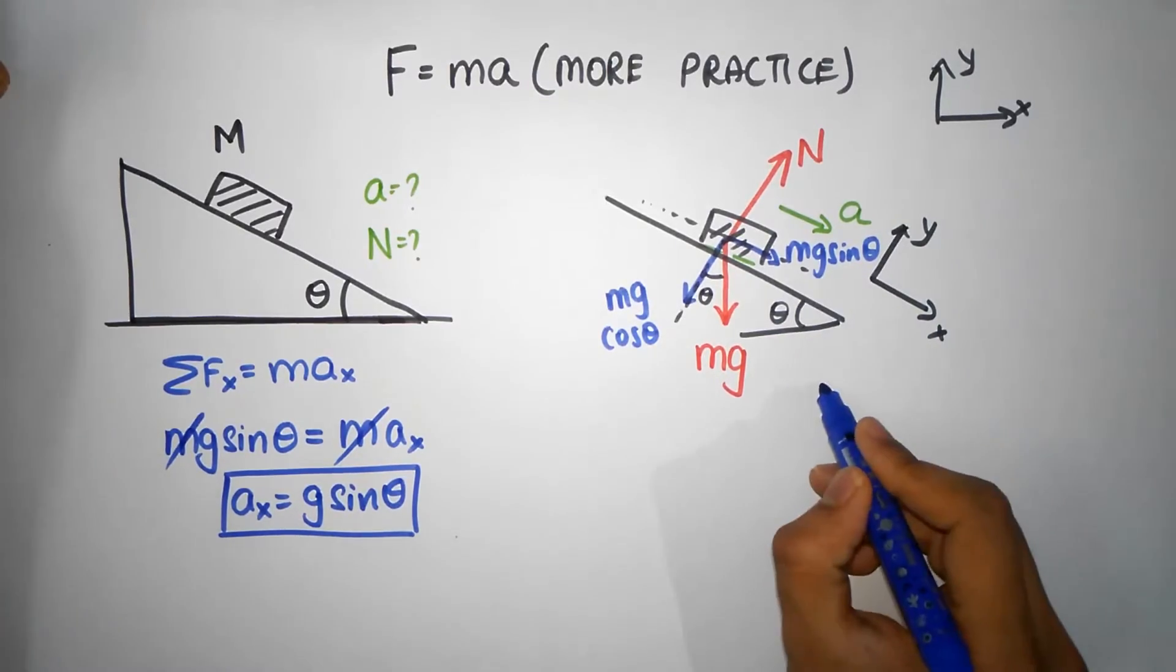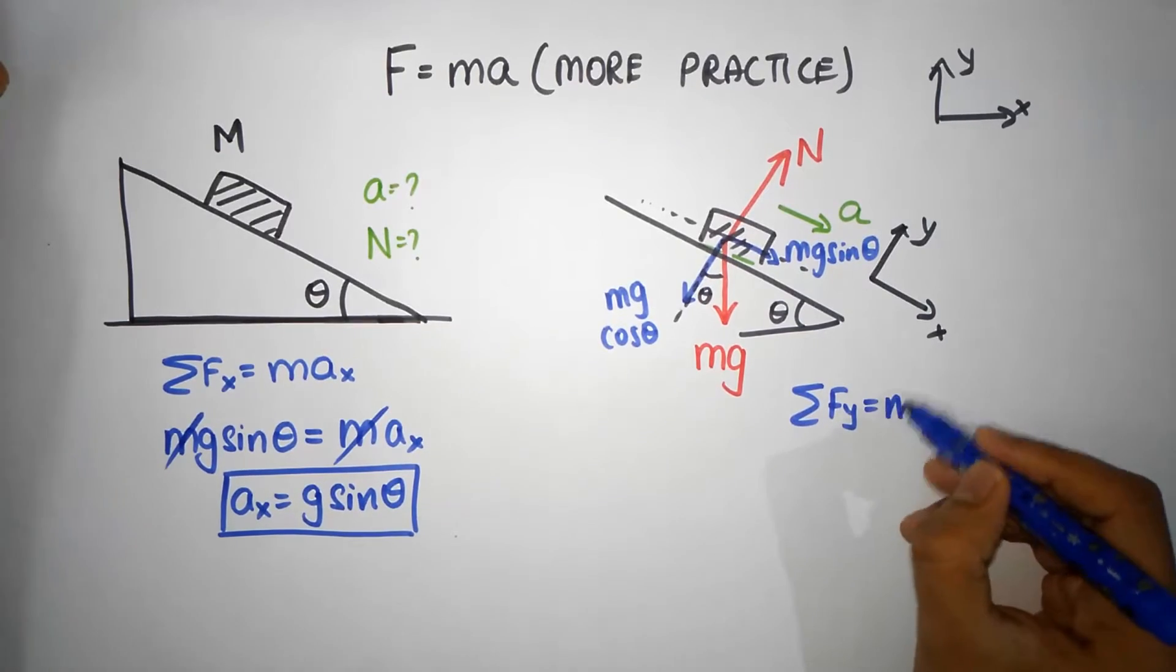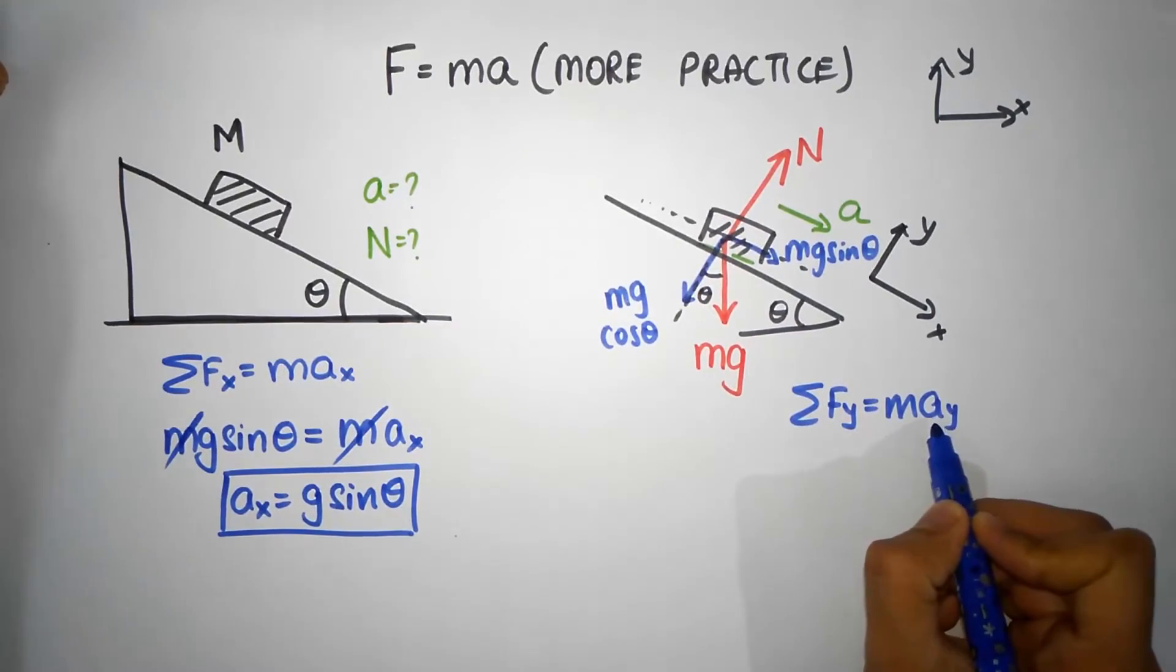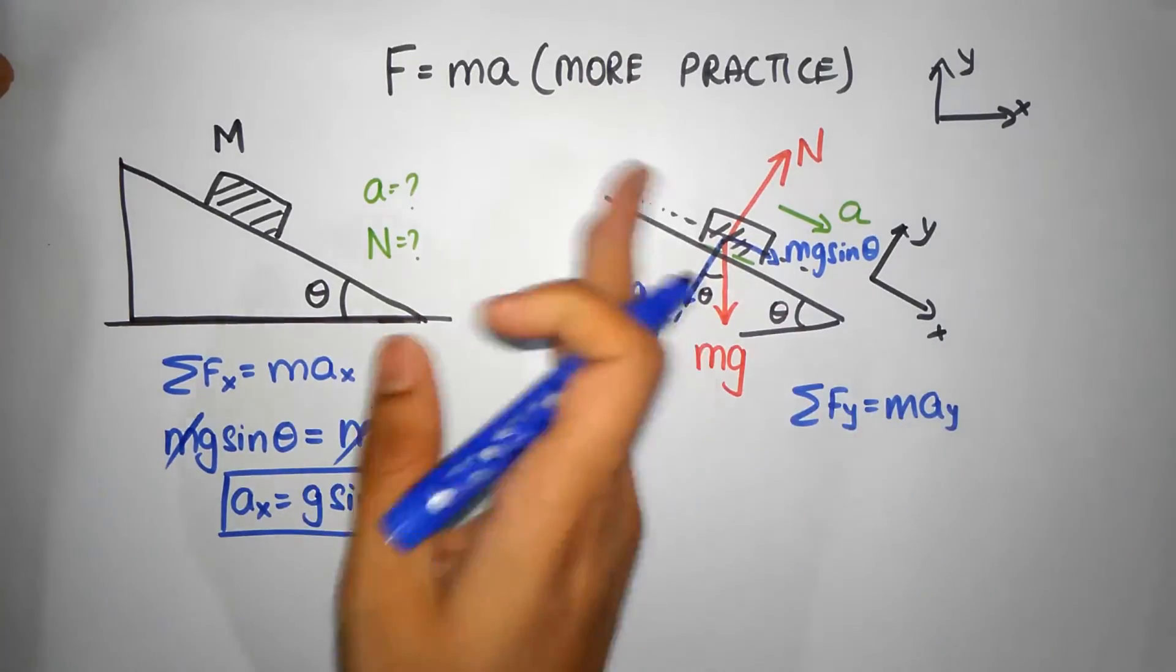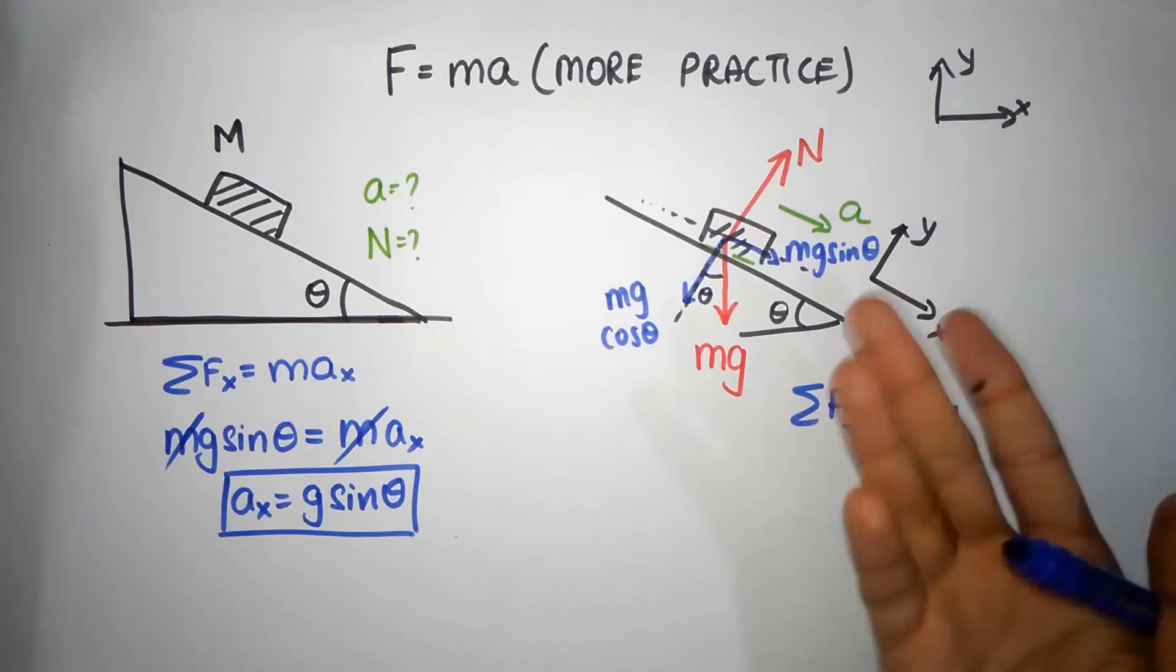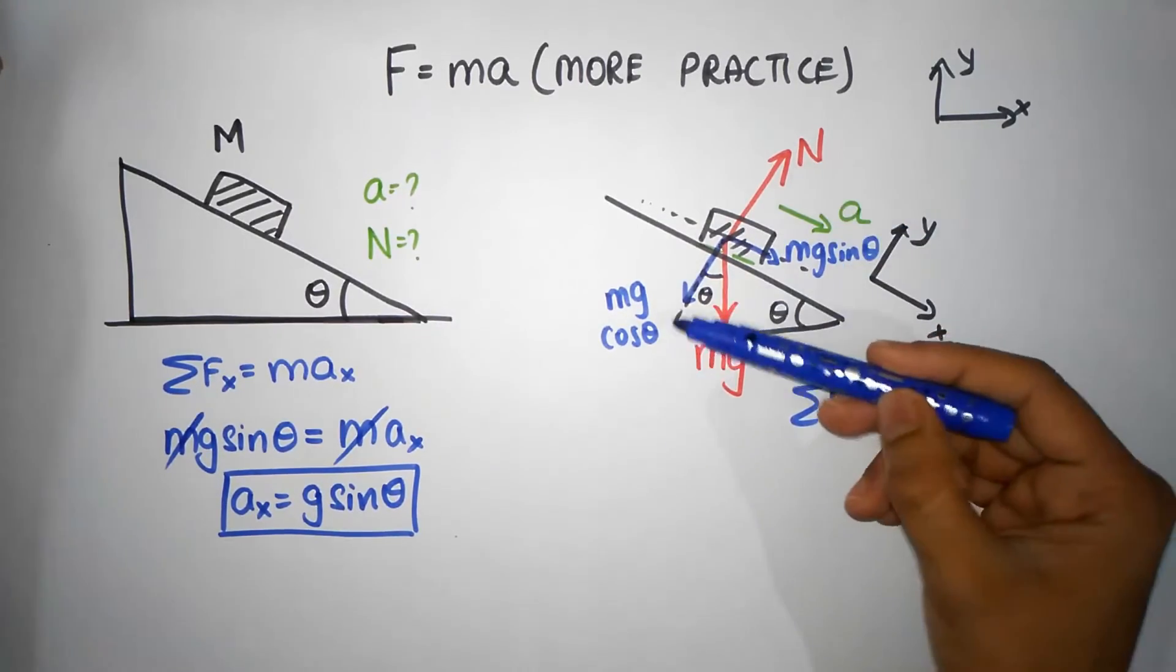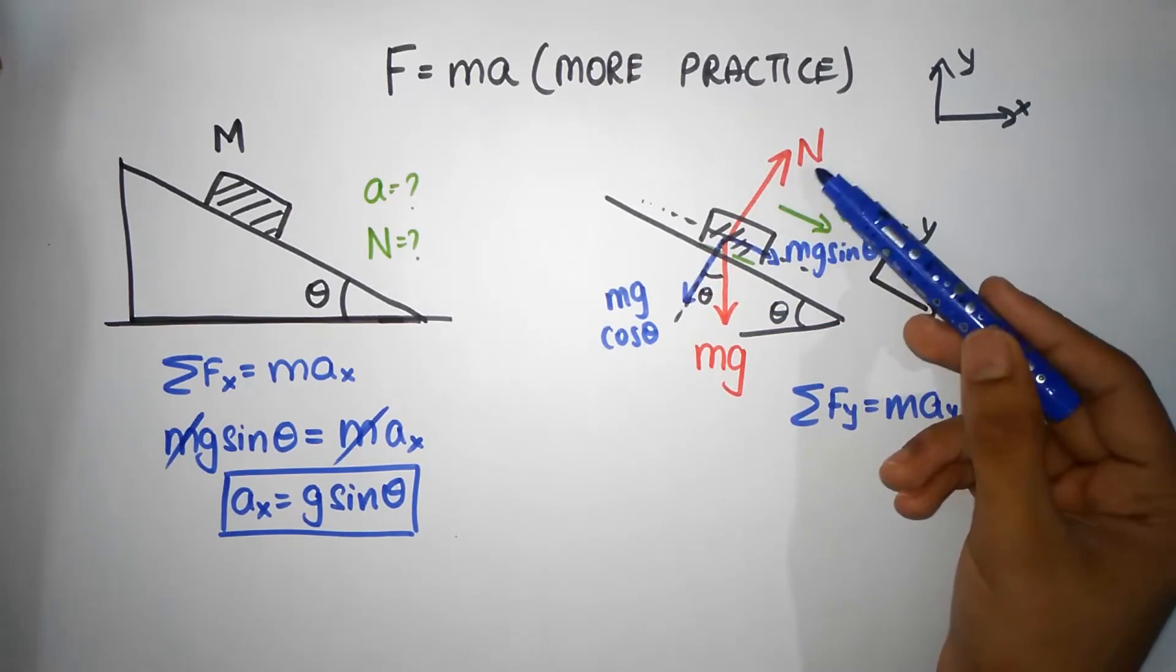All right, now let's go into the vertical. In the vertical we can again say that force in the vertical must be equal to mass times acceleration in the vertical. But there is no acceleration in the vertical, because in this problem you pretty much know it's going to slide down this way. There's not going to be any acceleration.